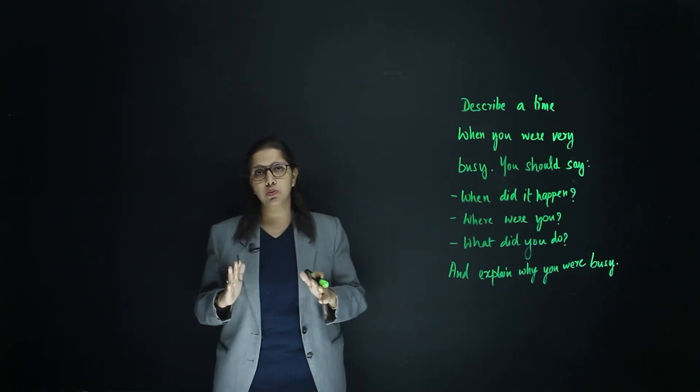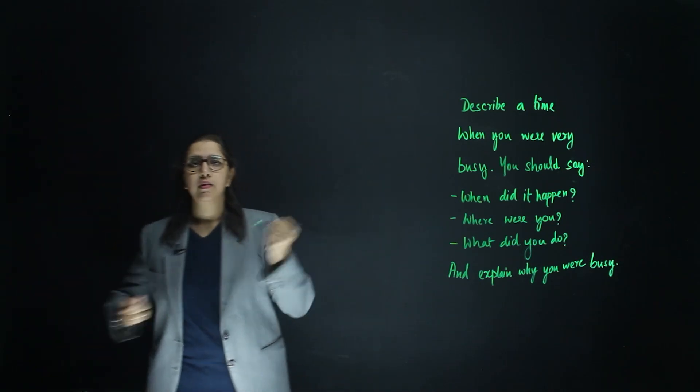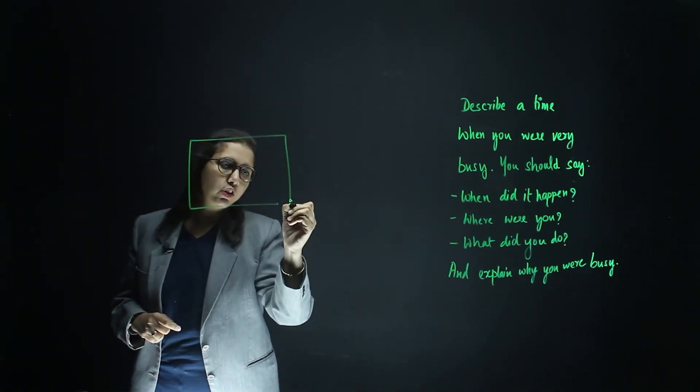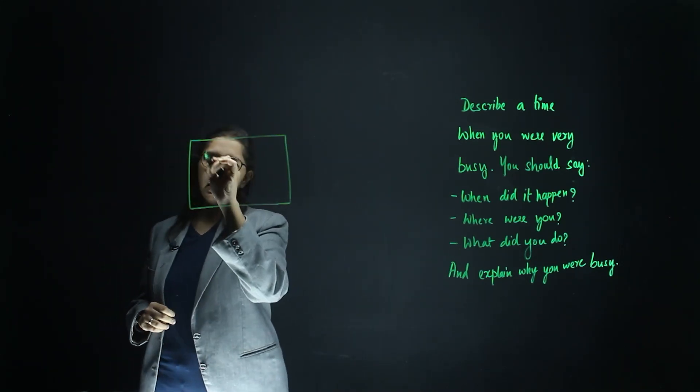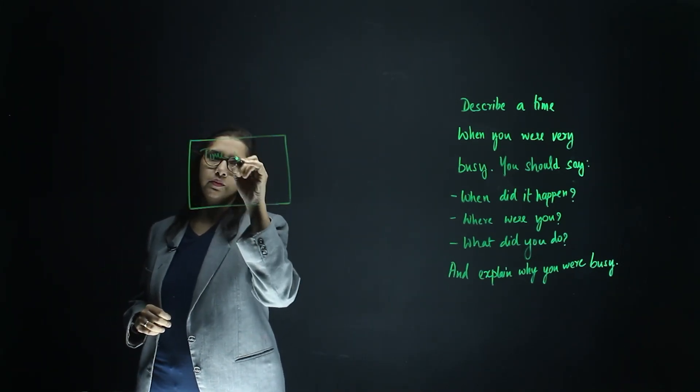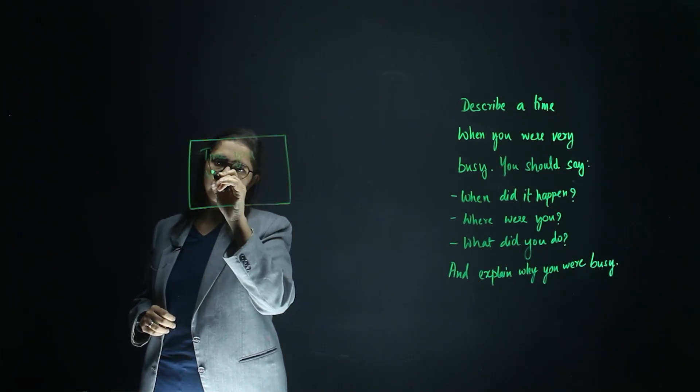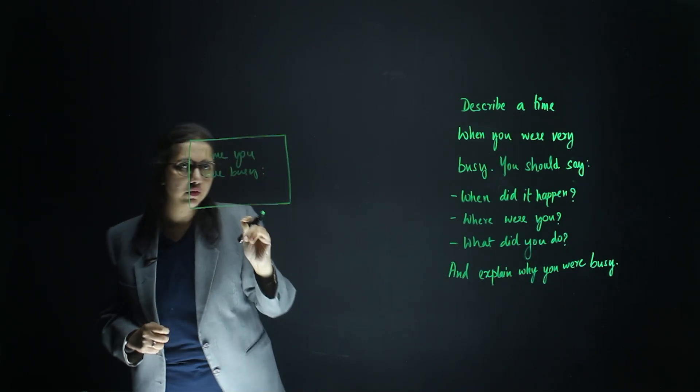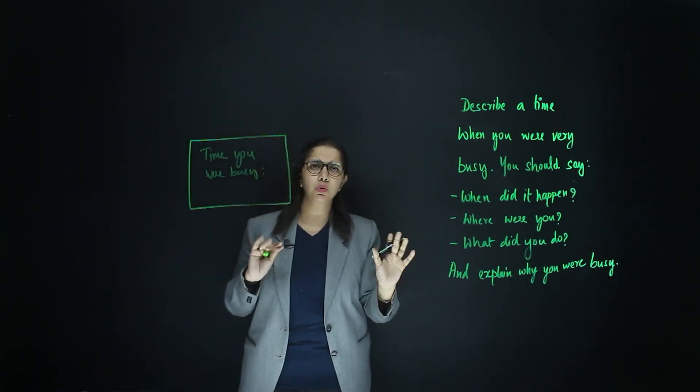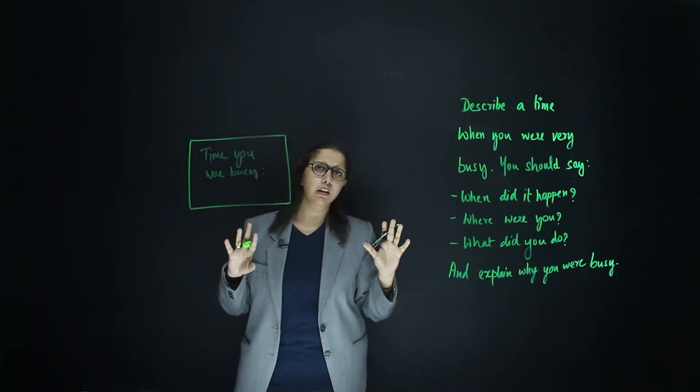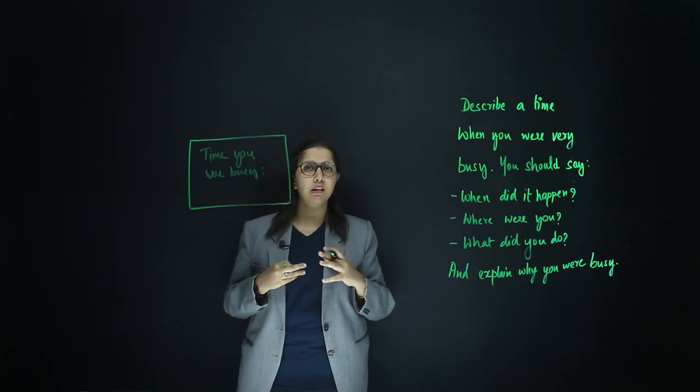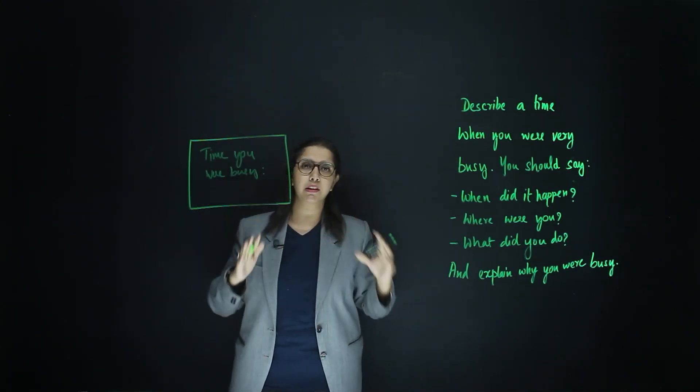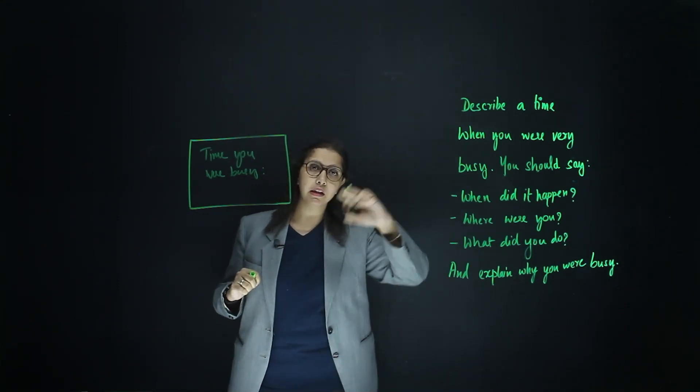Now the ideal way to do this is using a mind map. Select your core idea. What is the core topic here? It is time you were busy. Right? Now, think of one or two times when you were busy. That way, you will be able to build upon it.